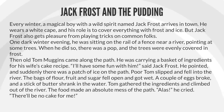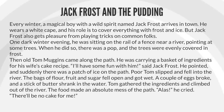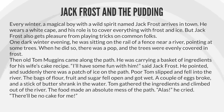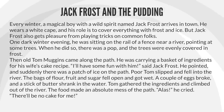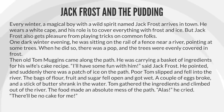Jack Frost and the Pudding. Every winter, a magical boy with a wild spirit named Jack Frost arrives in town. He wears a white cape, and his role is to cover everything with frost and ice. But Jack Frost also gets pleasure from playing tricks on common folks. One dark winter evening, he was sitting on the rail of a fence near a river, pointing at some trees. When he did so, there was a pop, and the trees were evenly covered in frost. Then old Tom Muggins came along the path. He was carrying a basket of ingredients for his wife's cake recipe. 'I'll have some fun with him,' said Jack Frost. He pointed, and suddenly there was a patch of ice on the path.